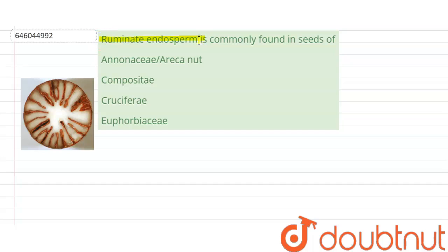Ruminate endosperm is commonly found in the seeds of... Our options are Anonaceae or Areca nut, Compositae, Cruciferae, or Euphorbiaceae.